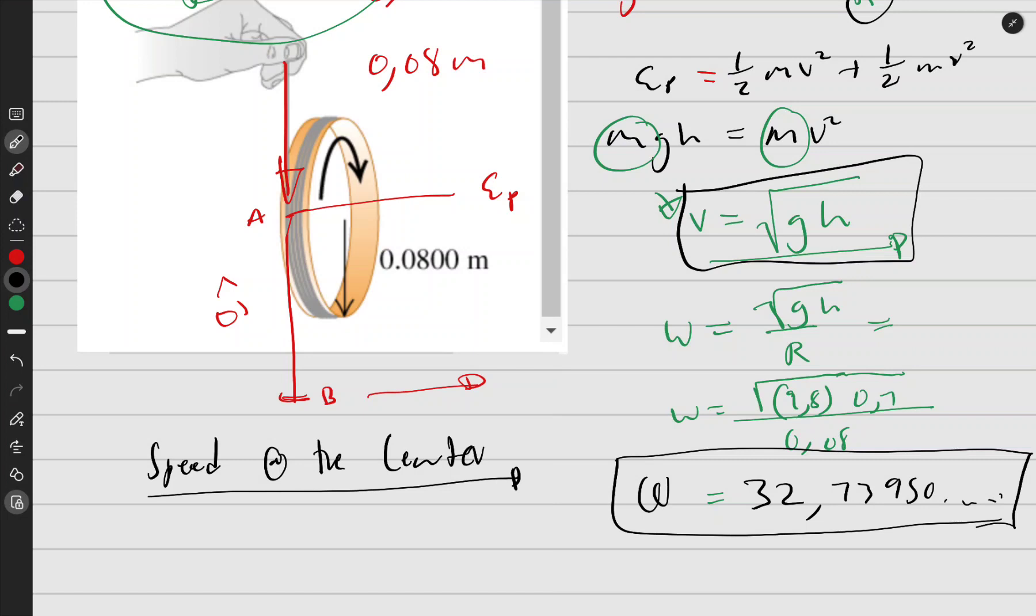On my calculator I used the formula V equals square root of gh. I put in g and h, and I got 2.619 meters per second. The first answer should be in radians per second for omega.